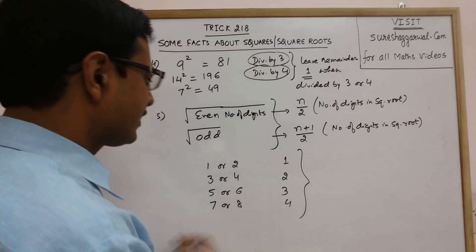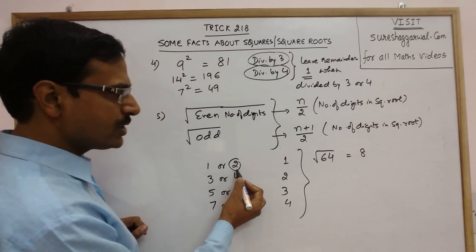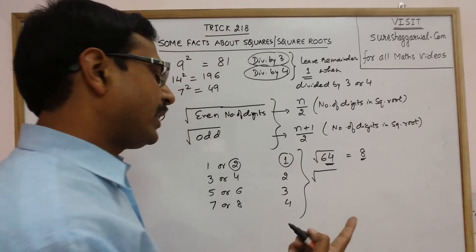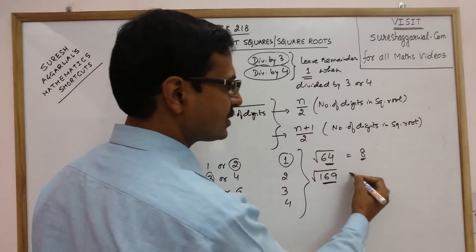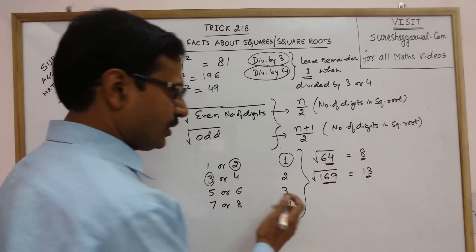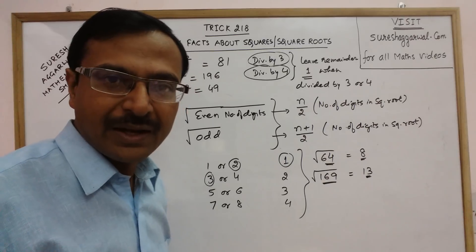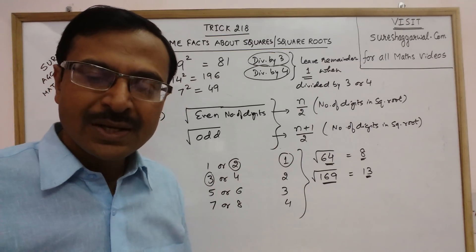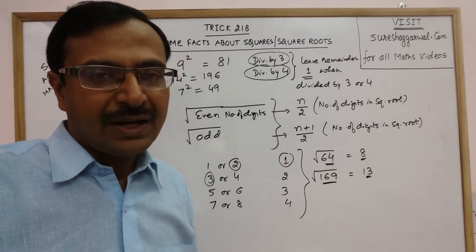For example, the square root of 64 is 8 — a 2-digit number gives a 1-digit square root. The square root of 169 is 13 — a 3-digit number gives a 2-digit square root. Similarly, any 5-digit perfect square has a 3-digit square root, and any 8-digit perfect square has a 4-digit square root. These are some very important properties of squares and square roots. Learn and practice them for success in competitive exams. Keep learning, keep subscribing, and share the videos if you like them.